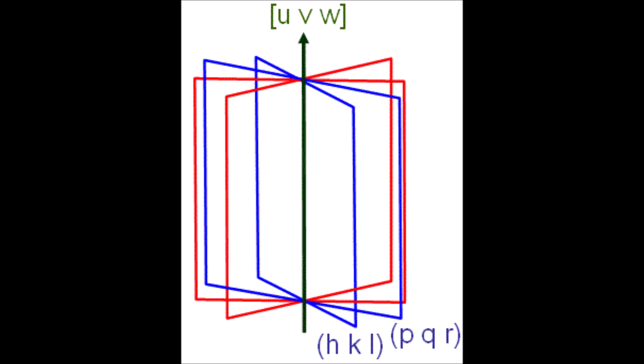In the case of our schematic here, we actually have four unique planes. Two of them are blue and two of them are red. For the two blue planes, we have one denoted with the Miller indices HKL and the other with PQR.